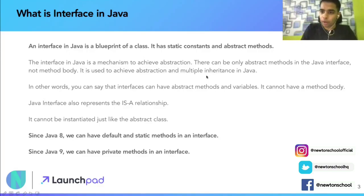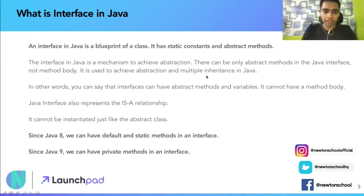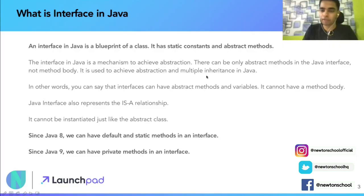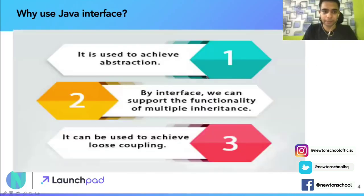Here are two important facts about Java versions 8 and 9. Since Java 8, we can have default and static methods in the interface. And since Java 9 has rolled out, we can also have private methods in the interface. We are going to see clear code examples of what this means in Java 8 and Java 9.